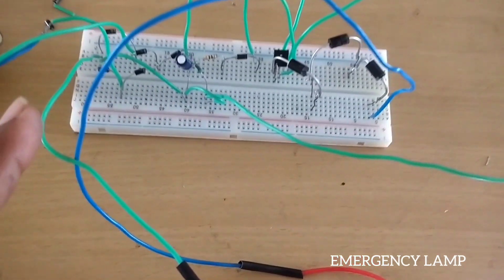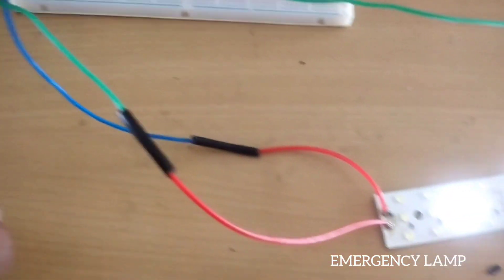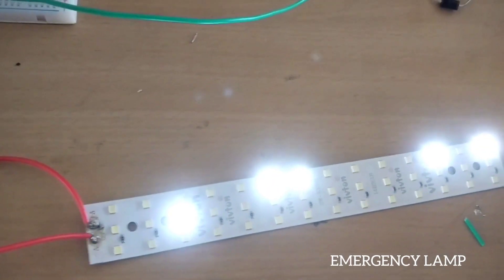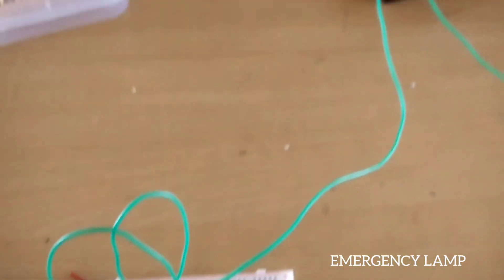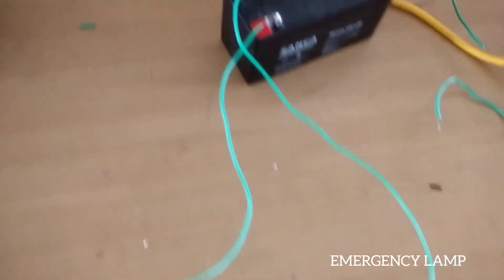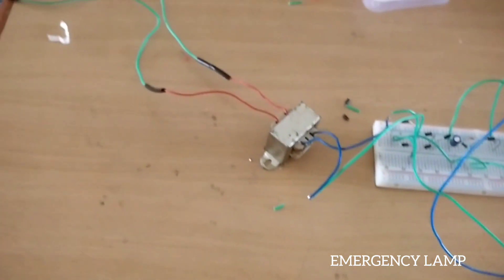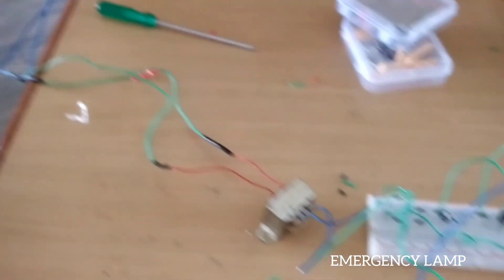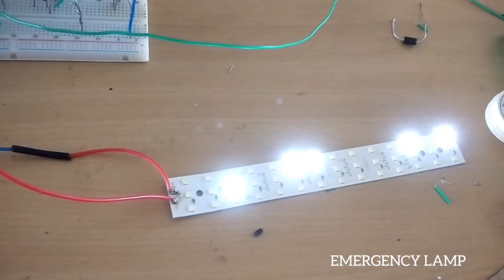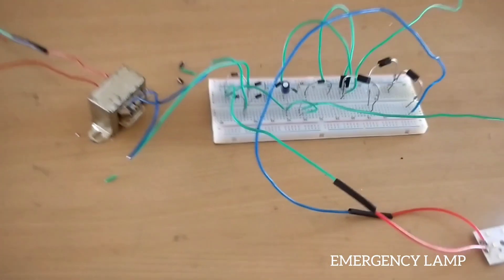Right, okay. And battery is given as per the circuit diagram. Now the switch here is in OFF condition, so the emergency light is in glowing stage. Now you can see.